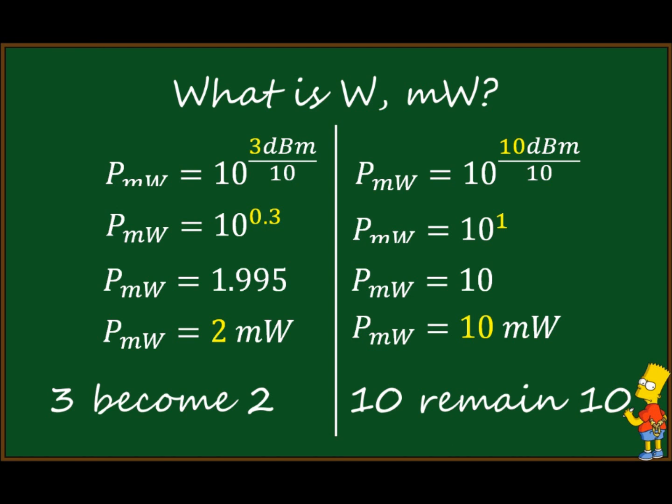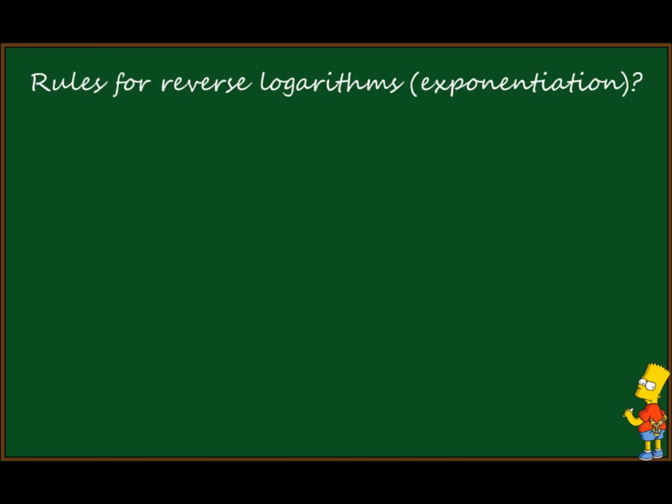Just remember: 3 became 2, and 10 remains 10. Again — 3 became 2 and 10 remains 10. We also need a few simple rules. I won't cover all rules here; I will just take those needed for the conversion.